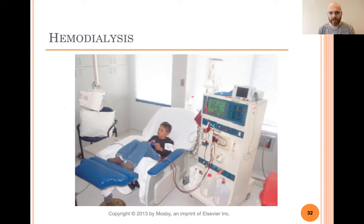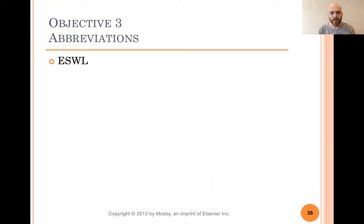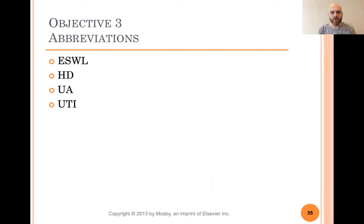This is what a dialysis machine looks like — you can see the tube with blood going into the machine, and then a tube where it puts the filtered blood back into your body. This is a cross-section of what being catheterized looks like. Abbreviations: ESWL is extracorporeal shockwave lithotripsy, or just lithotripsy — the surgical crushing with sound. HD is hemodialysis. UA is urine analysis. UTI is urinary tract infection.